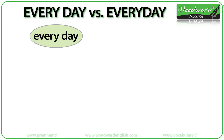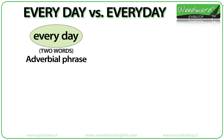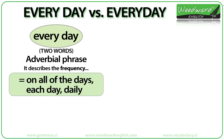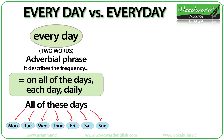Let's look at the first one. Every day, written as two words, is an adverbial phrase. An adverbial phrase is a group of words used as an adverb. Adverbs normally describe how something happens or the frequency it happens. In this case, every day describes the frequency of something. Every day means on all of the days, each day, or daily.